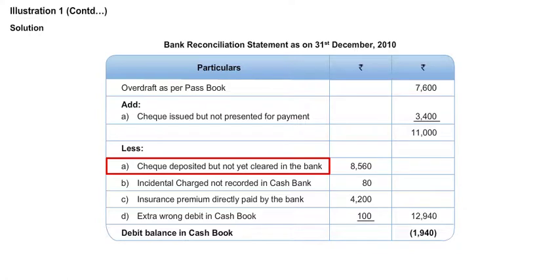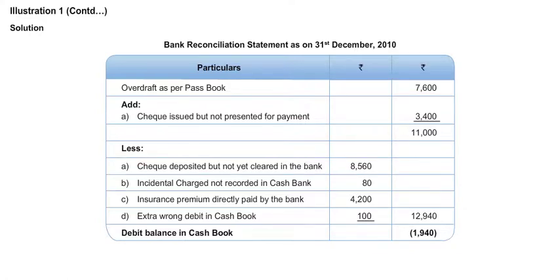Cheques deposited but not collected by bank: 8560. Now if the cheques are deposited, obviously the first entry will be in the cashbook. When cheques are deposited, the overdraft balance will come down in the cashbook — overdraft balance will go down. We are interested in calculating the cashbook balance, so we need to deduct because the entry is not yet made in the passbook since the cheques are not cleared. So you will deduct 8560.